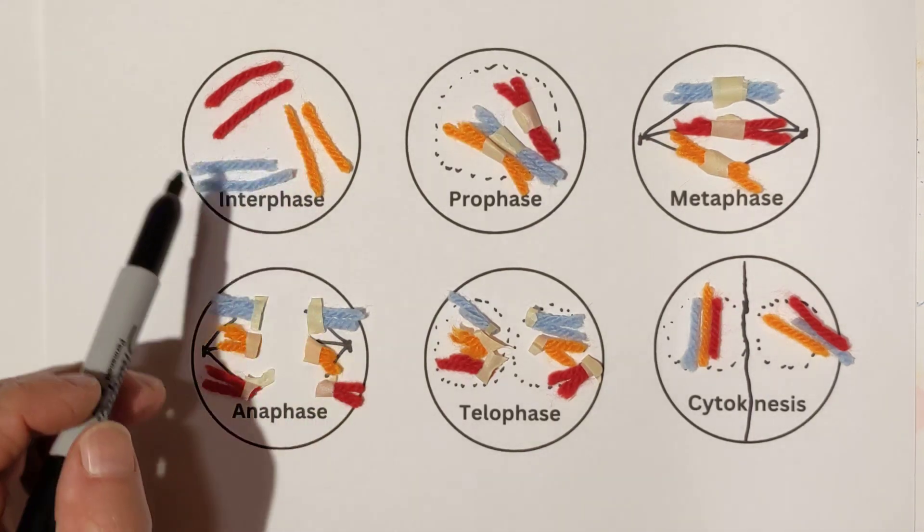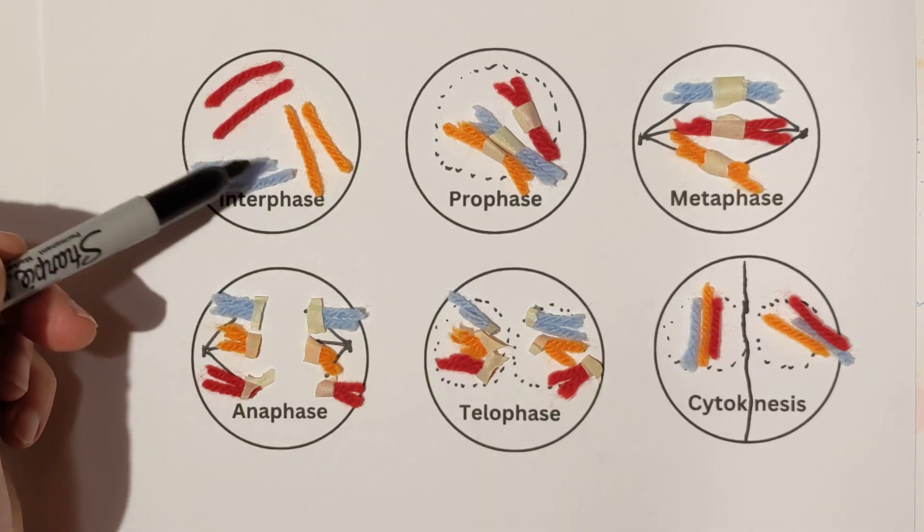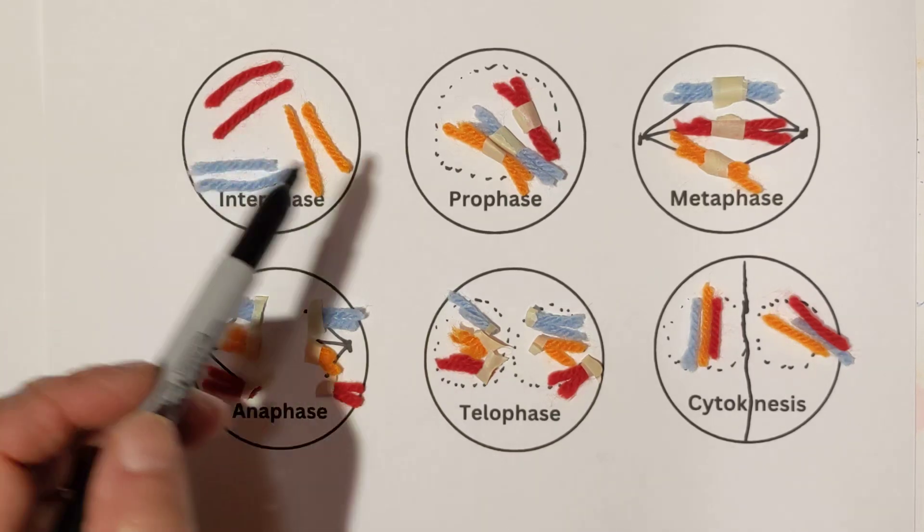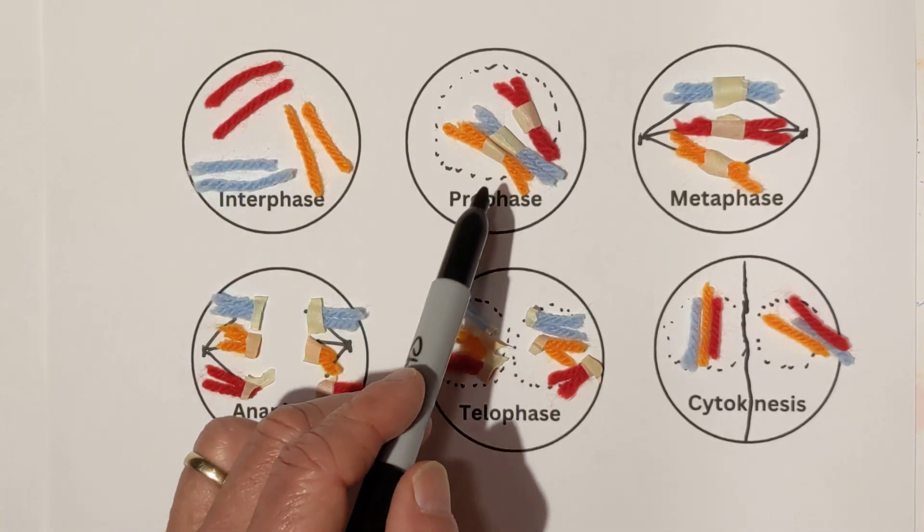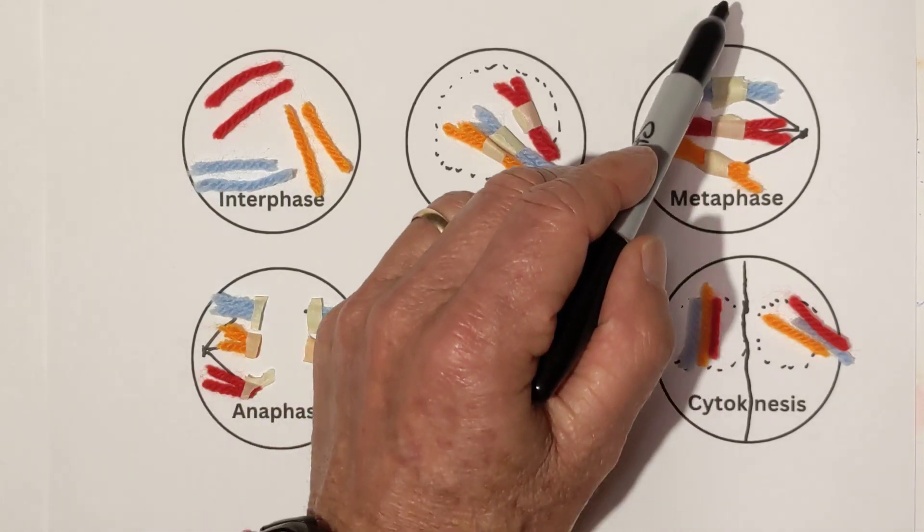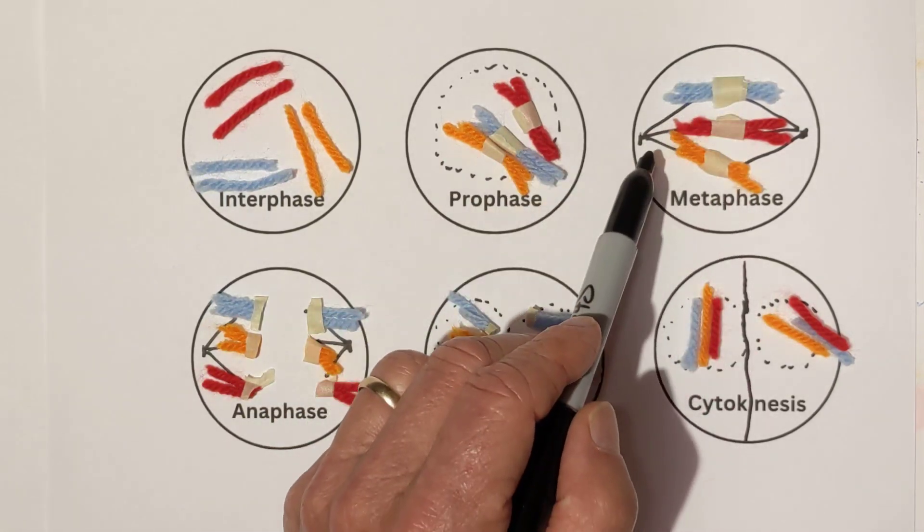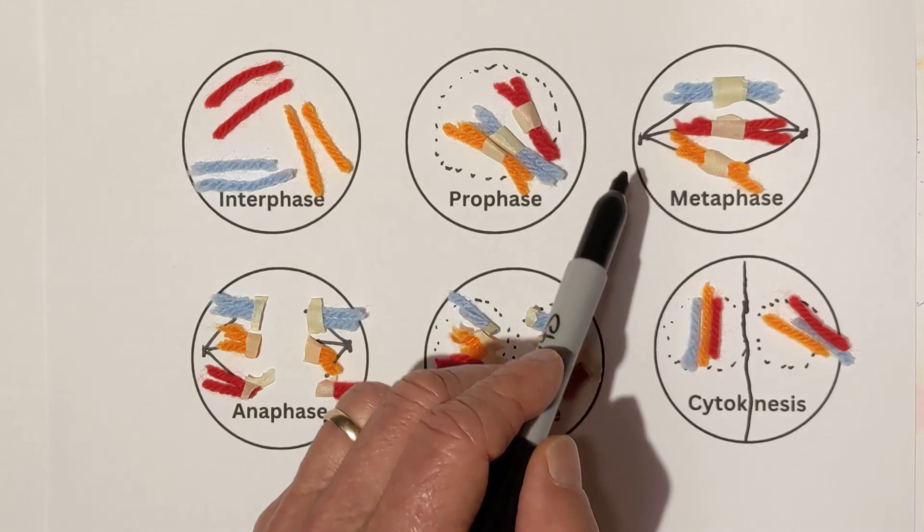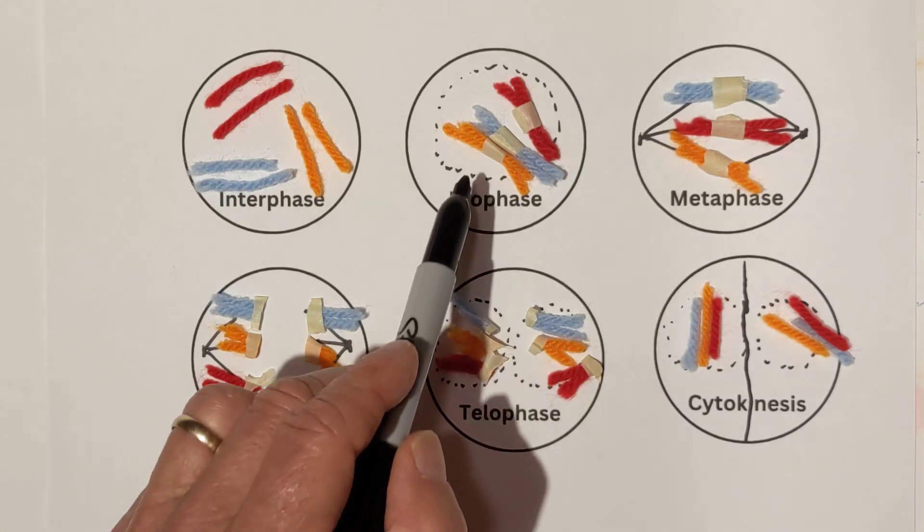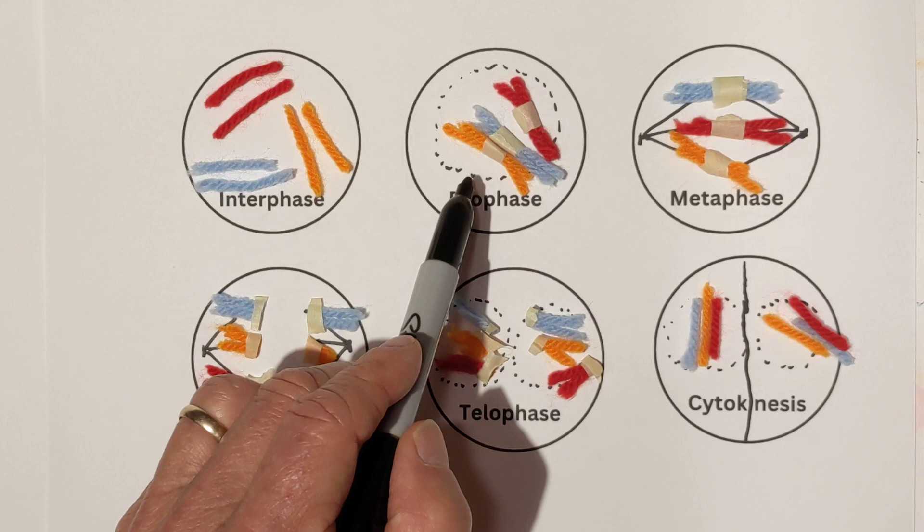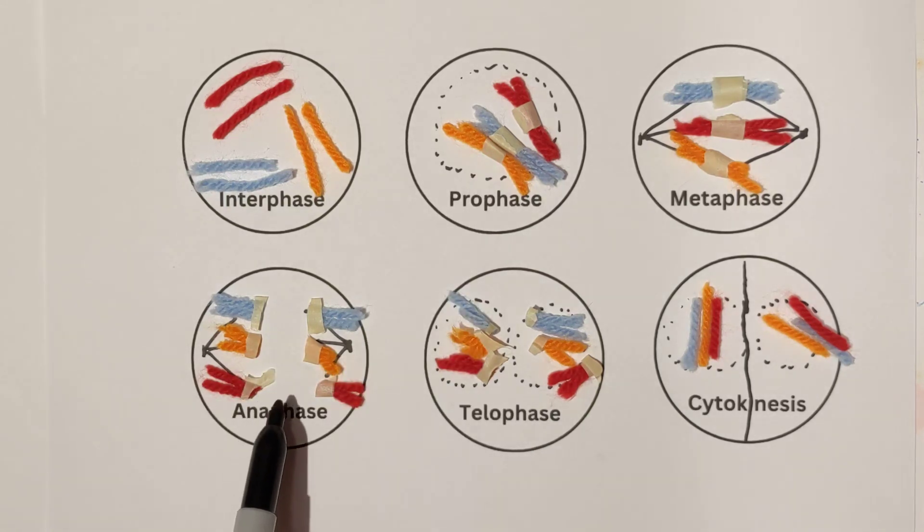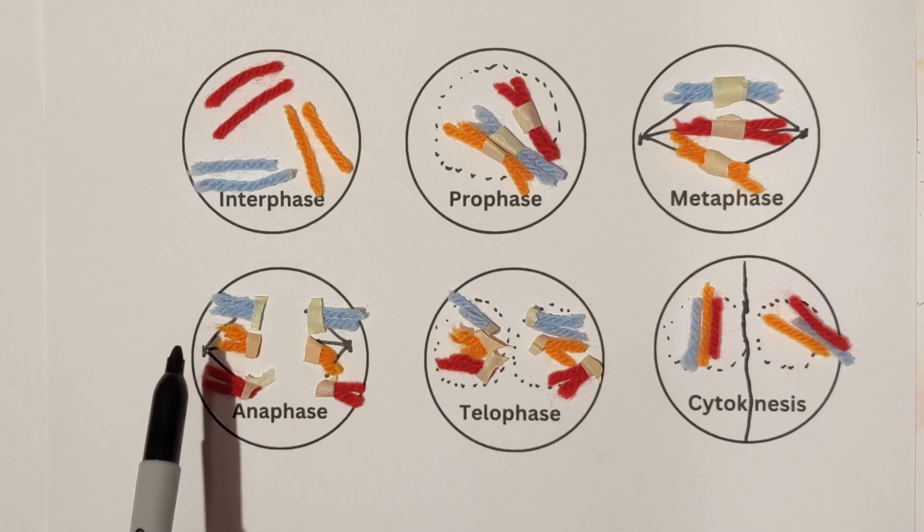And in interphase, the DNA makes a copy of itself, an exact copy, ready to start mitosis. In prophase, the chromosomes appear. Metaphase, they line up in the middle with the help of the spindle fibers attached to the centriole. Also in prophase, the nuclear envelope begins to dissolve.